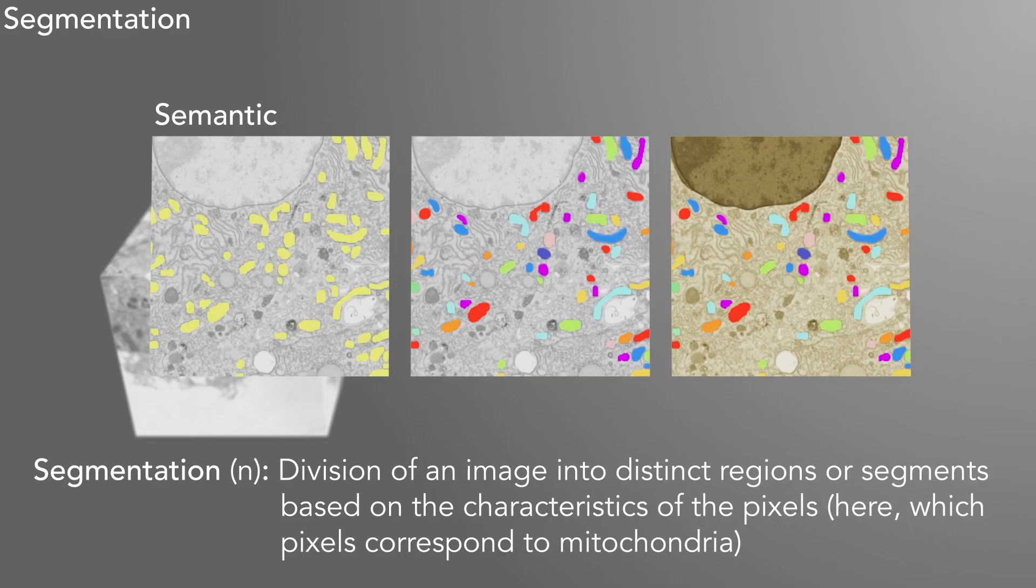Broadly speaking, there is semantic segmentation. In this example, all the pixels corresponding to mitochondria are assigned to a single label or class, and everything else is background.